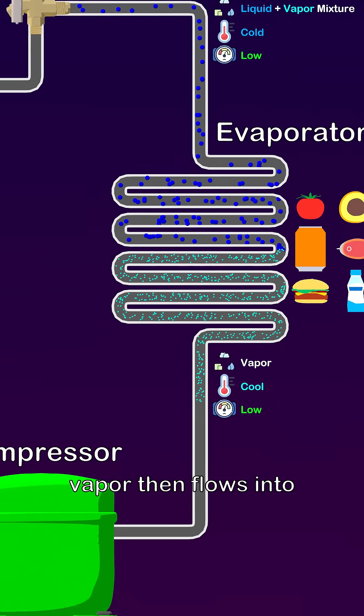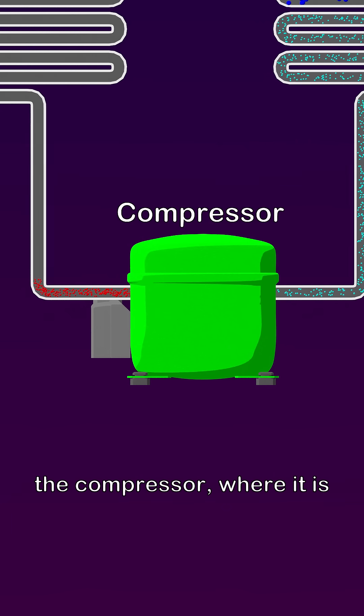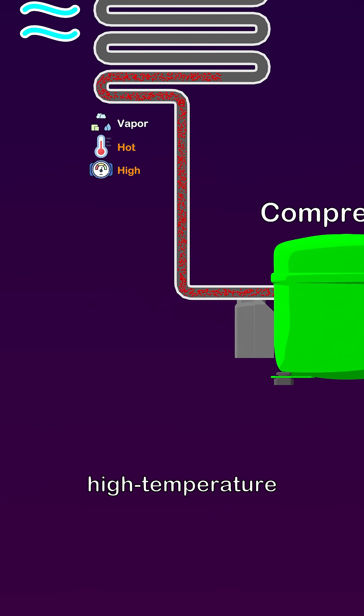The resulting saturated vapor then flows into the compressor, where it is compressed into a high pressure, high temperature, superheated vapor.